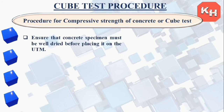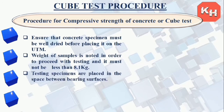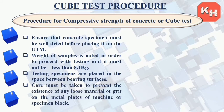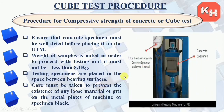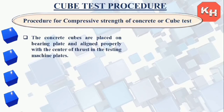Ensure that the concrete specimen is well dried before placing it on the universal testing machine. The weight of the sample is noted and must not be less than 8.1 kg. Testing specimens are placed between the bearing surfaces, taking care to prevent any loose material or grit on the metal plates. The maximum load at which the concrete specimen collapses is noted, with pressure applied from both the upper and lower sides.